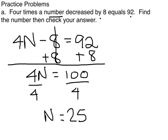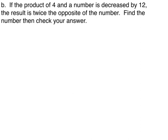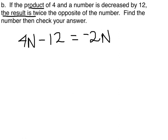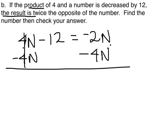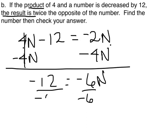Next problem. If the product of 4 and a number, now how do you get a product? You multiply, so 4 times a number. If that is decreased by 12, the result is twice the opposite of the number. Now in this one, I'm going to move this 4N to the right-hand side. I'm going to do that by subtracting 4N from both sides. And then I get negative 12 equals negative 6N. If I divide by negative 6 on both sides, I'm going to get my answer is 2.